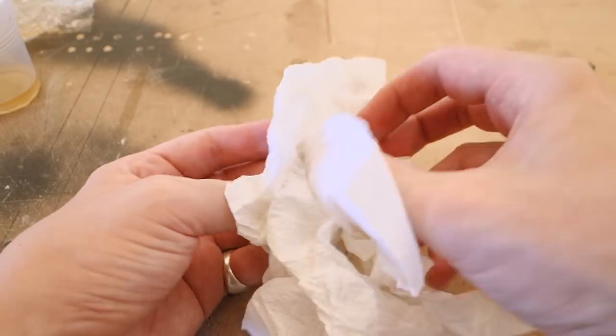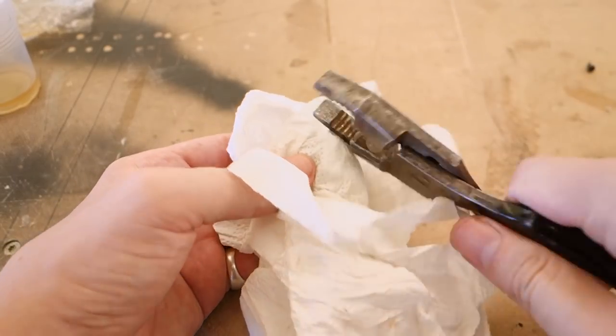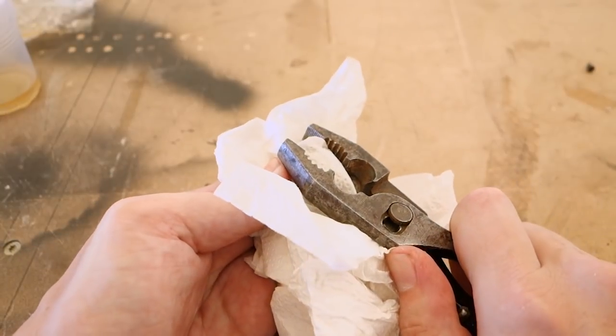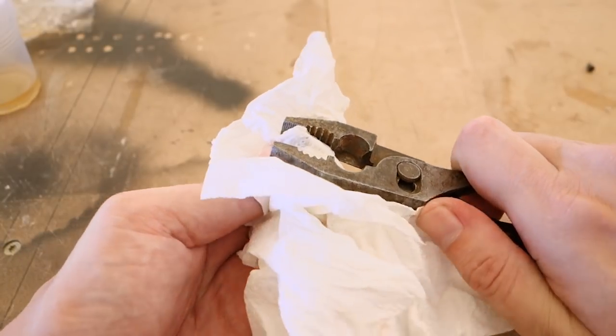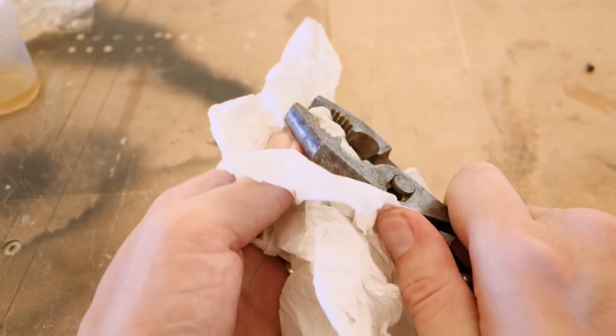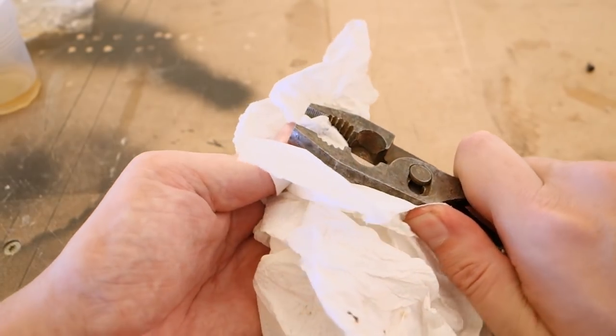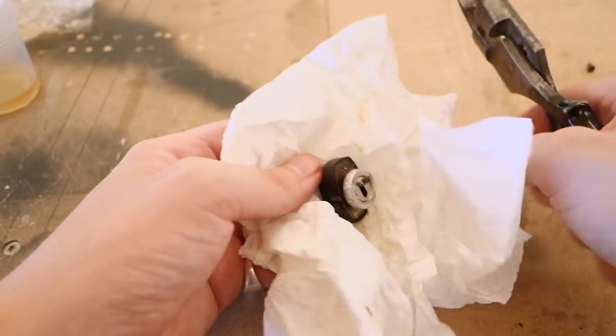Even after soaking the nut was still very stubborn, but it was moving with some force using pliers. Since I didn't want to risk damaging the nut, the pliers were padded with several layers of paper towel in between and slowly backed out.